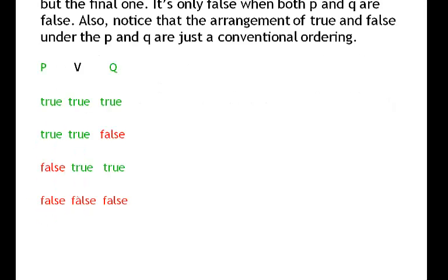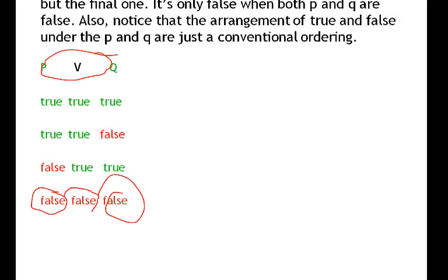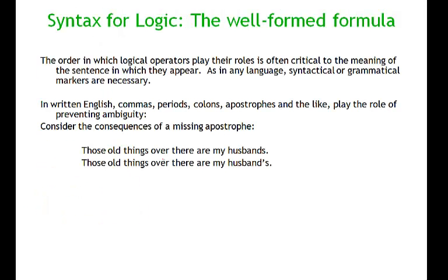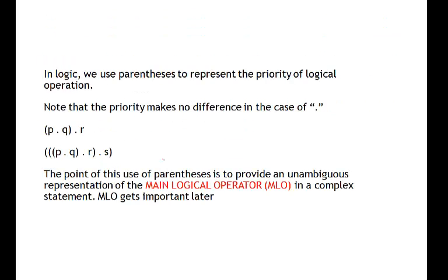The truth table for OR — for the disjunction — is set up so that the only way the sentence as a whole can be false is if both parts of the disjunction, both disjuncts, are false. This is the only case where the disjunction as a whole is false. We're going to think more about the syntax for logic and how to build well-formed formulas, which is described in detail in the text.